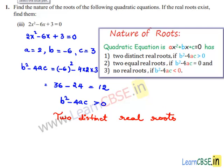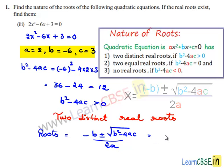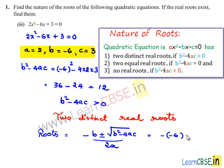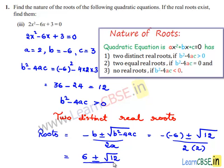Now let us find those roots. We know that roots = (-b ± √(b² - 4ac)) / 2a. With b = -6, this becomes (-(-6) ± √12) / (2 × 2), which is (6 ± √12) / 4.